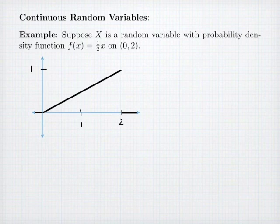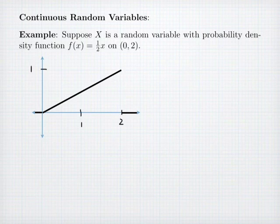For example, think about this random variable. X is continuous and has a density given by one-half x on the interval 0 to 2. We know that the values of my random variable have to land in the interval from 0 to 2 — it can't be outside. Now if I'm interested in the probability that x equals 1, that is 0. The probability that x equals 1 has a value of 0.